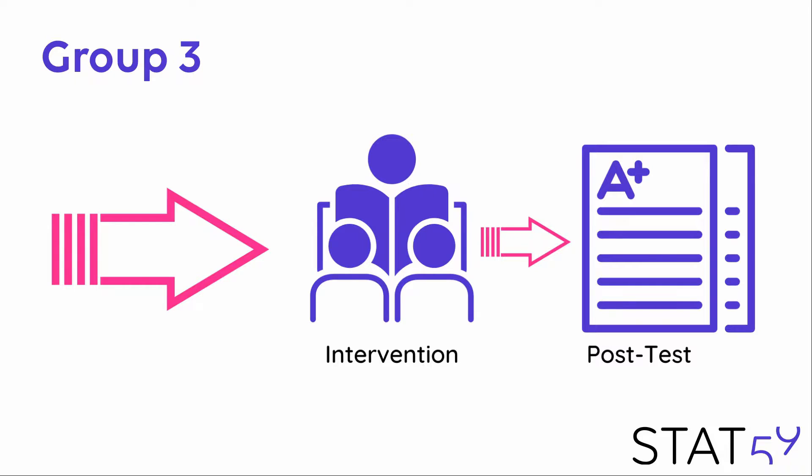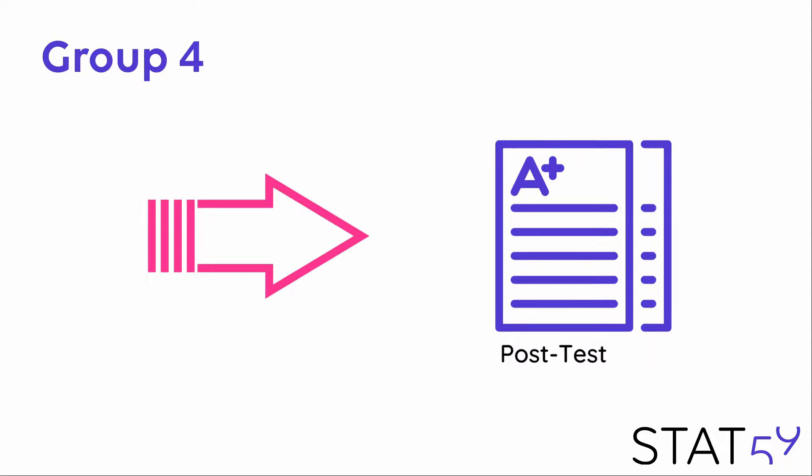Group 3 does not get the pre-test, but does get the intervention and the post-test. And group 4 gets only the post-test. Once again, group 4 is a type of control.